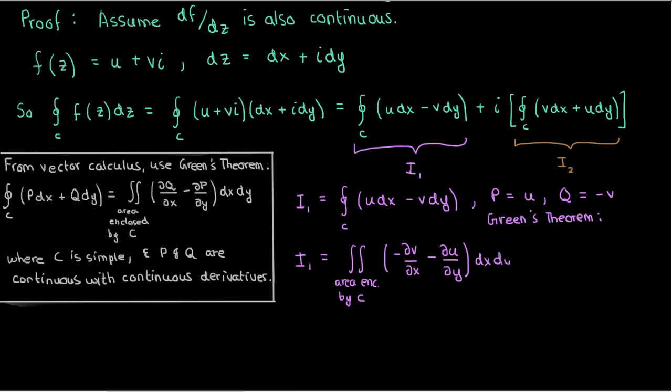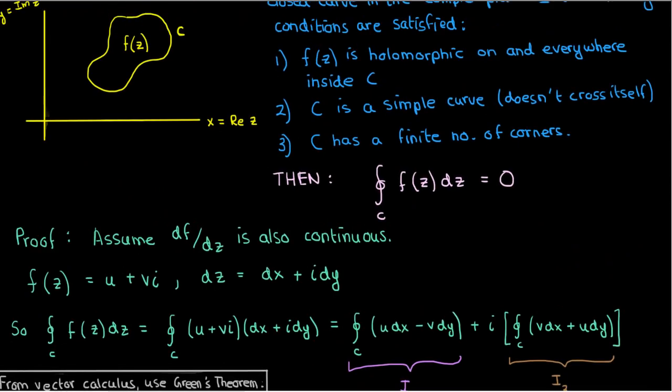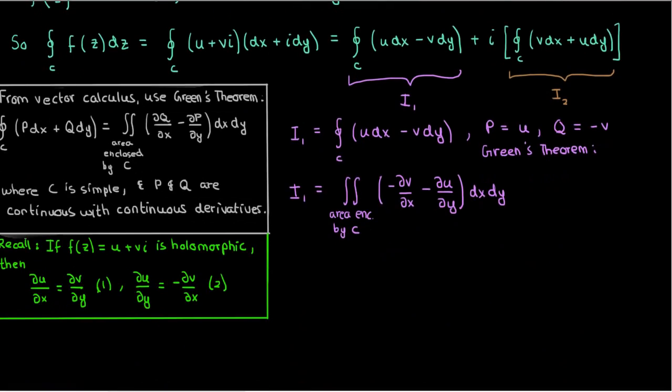Now recall that if a function f is holomorphic, then its real and imaginary parts obey the Cauchy-Riemann relations. It then follows that the function we're using in the proof of Cauchy's theorem also obeys the Cauchy-Riemann relations because after all it's holomorphic, according to one of the initial assumptions, the statement. Since the Cauchy-Riemann relations apply, du/dy equals negative dv/dx.